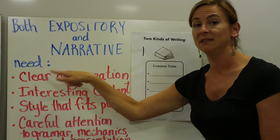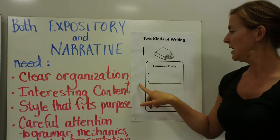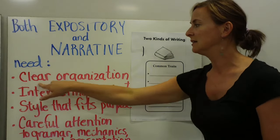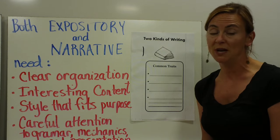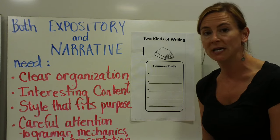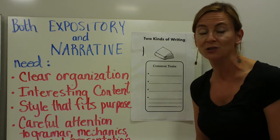Both of them are going to need the following. I'd like you to copy these down on your bullets. The first bullet is clear organization. Both expository and narrative types of writing need to be organized clearly for the reader to follow along and understand what's happening.